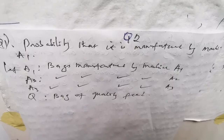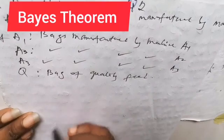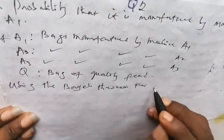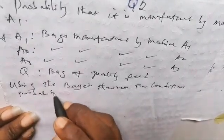We are looking for the probability that the bag selected at random is manufactured by machine A1 and is also of a quality feed. This is actually a conditional probability — you are given the condition. To solve any problem on conditional probability, we can make use of Bayes' theorem for conditional probability.